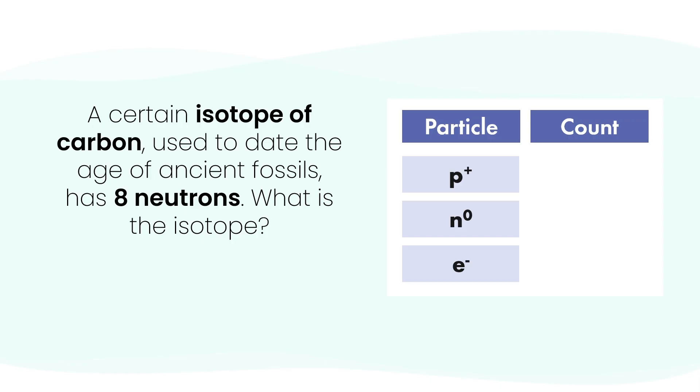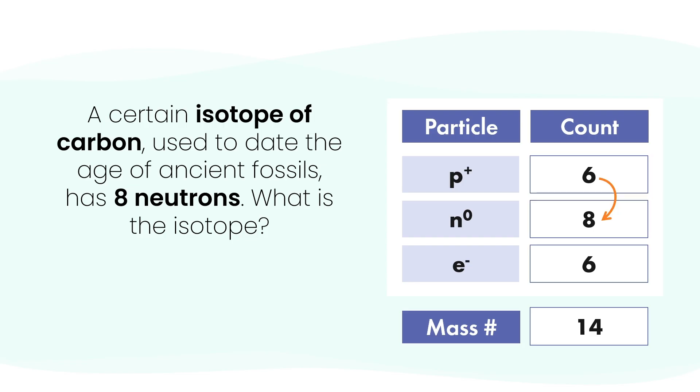Let's break it down using what we know. We're told it has 8 neutrons. And since it's carbon, we know it must have 6 protons—that's what makes it carbon in the first place. It's neutral, so that means it also has 6 electrons. Now we add protons and neutrons together to find the mass number: 6 plus 8 equals 14. That's the mass number.